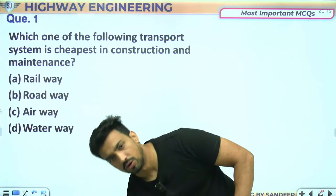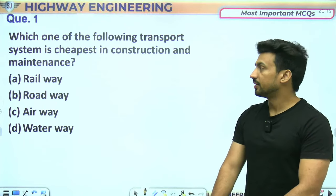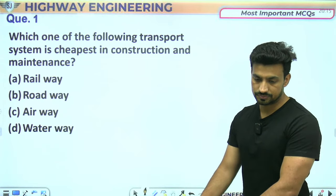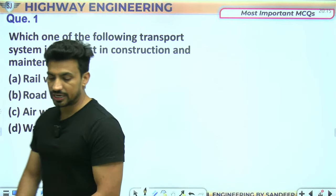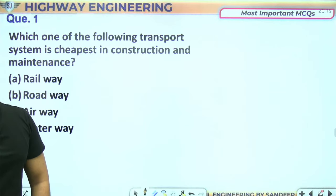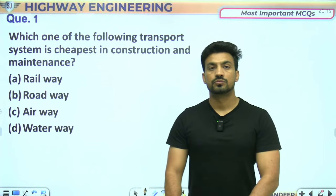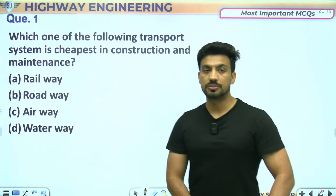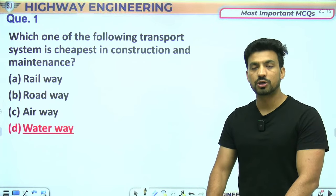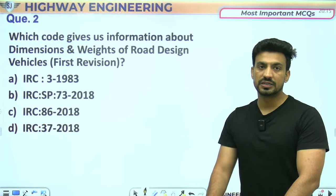पहला question: Which of the following transport system is the cheapest in construction and maintenance? Construction और maintenance के point of view से इनमें से कौन सा सबसे cheapest है? Waterway सबसे cheapest है — waterway को बनाना और maintain करना सबसे cheapest है। Option D correct answer है।